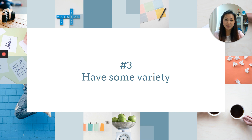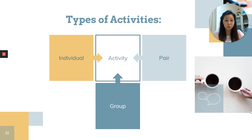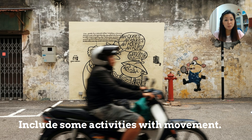Number three is to have some variety. This is about creating various types of activities for your students. Since asynchronous learning is usually individual, in synchronous sessions try to create pair work or group work so students stay engaged and connected. You can also use a variety of activities with webcam or mic — though this depends on connectivity and bandwidth for both you and your students. Try to include activities with movement, as it's tiring to stare at a screen and sit for long periods.